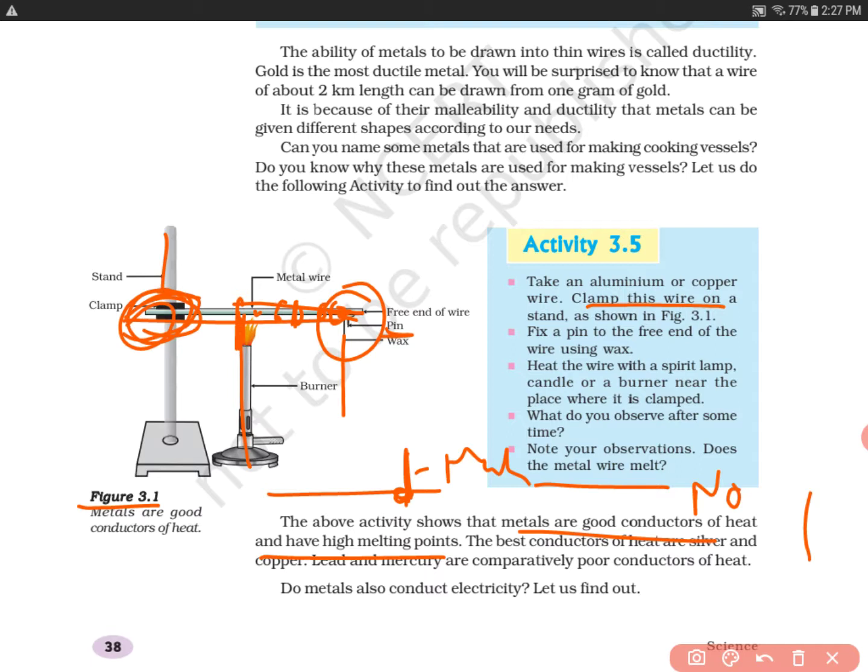The best conductors of heat are silver and copper. This is why metal wires are made up of copper and silver. Copper and silver are used because they are the best conductors of heat. Lead and mercury are comparatively poor conductors of heat. So you can see copper and silver - you can ask which of the following is a good conductor of heat: silver, copper, both of these, or none of these. Silver and copper both are good conductors of heat, while lead and mercury are comparatively poor conductors.